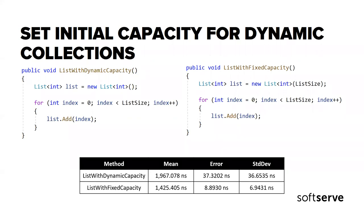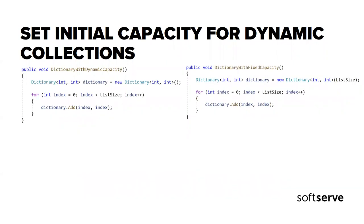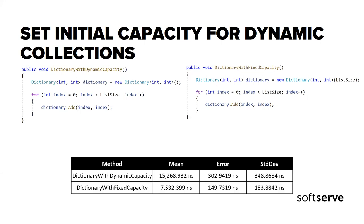In practice, the improvement in performance is probably even greater because BenchmarkDotNet performs garbage collections before and after each benchmark run. I also performed another benchmark for Dictionary collection, comparing dynamic size versus fixed size. The results confirm that setting the initial size for dynamic collections can be very useful.